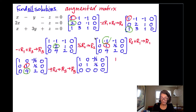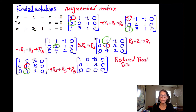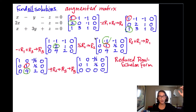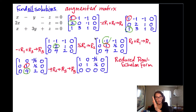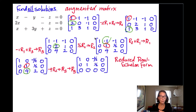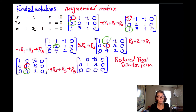We are now in reduced row echelon form. It's in row echelon form when you have a step-like pattern — non-zero entries in the first row, and as you go down, the next non-zero entries are to the right. It's called reduced row echelon form because whenever you have a leading one, all the other entries in that column are zeros. Both leading ones have only zeros above and below them, so we can't go any further.